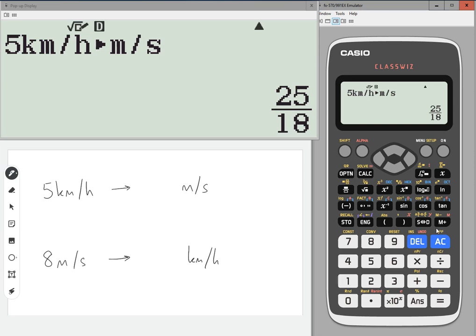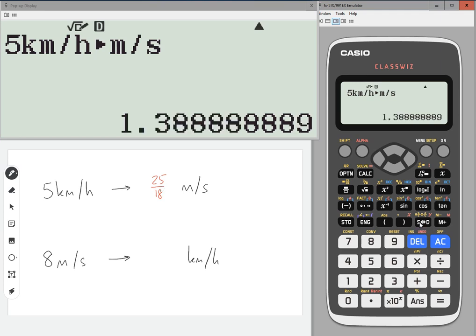So it's 25 18ths per meter per second, so 1.39 meters per second to 3 sig fig.